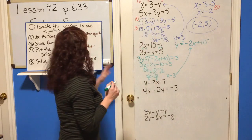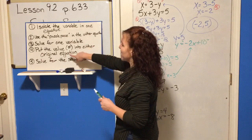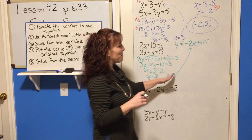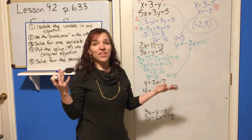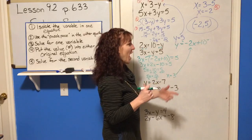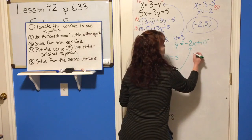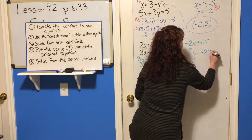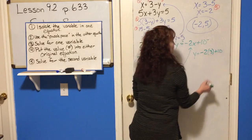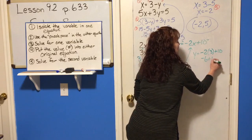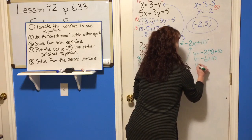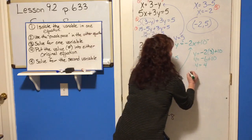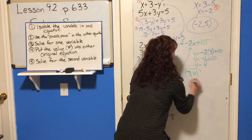Now take that piece and put it back into your puzzle piece equation — that way you don't have to solve quite as much. So y equals negative 2 times 3 plus 10. Negative 2 times 3 is negative 6, plus 10 gives y equals 4. Don't forget your final answer: (3, 4).